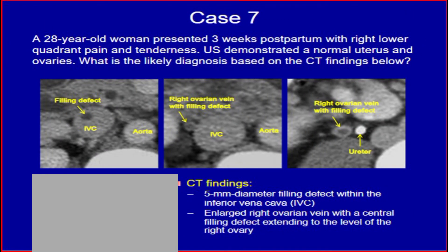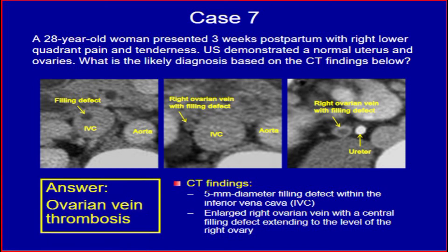Case 7. A 28-year-old woman presents three weeks postpartum with right lower quadrant pain and tenderness. Ultrasound demonstrated a normal uterus and ovaries. CT findings: a 5 mm diameter filling defect within the inferior vena cava; enlarged right ovarian vein with a central filling defect extending to the level of the right ovary. The answer is ovarian vein thrombosis.